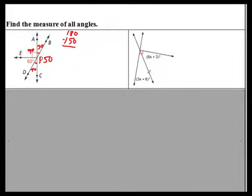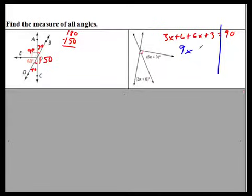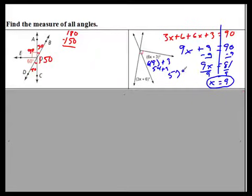Algebra with complementary angles: if angles (3x + 6) and (6x + 3) are complementary, set up the equation 3x + 6 + 6x + 3 = 90. Combine like terms: 9x + 9 = 90. Subtract 9 from both sides: 9x = 81. Divide by 9: x = 9. Plugging back in: 6(9) + 3 = 57 degrees, and the other angle is 33 degrees. Check: 57 + 33 = 90.